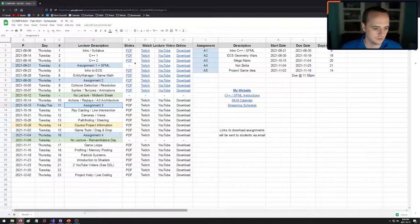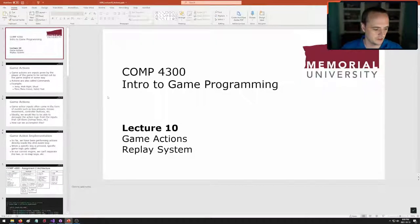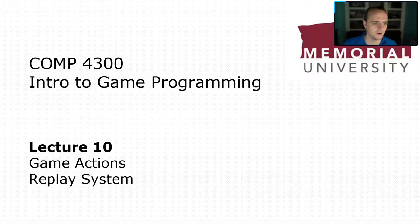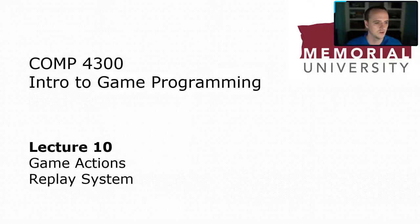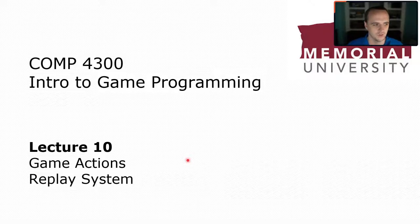This should be a pretty quick one. I'm going to give some slides, then dive into some code and show you a sneak preview of assignment 3 and the action architecture we're going to use. So, Computer Science 4300 lecture number 10 — we are going over game actions, and I will show you how you could implement a replay system if you wanted to.